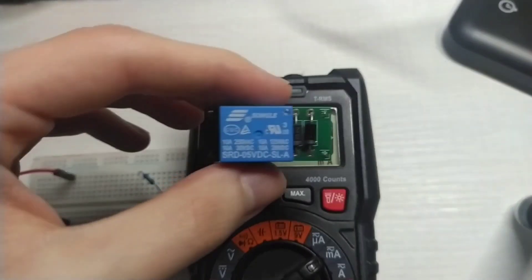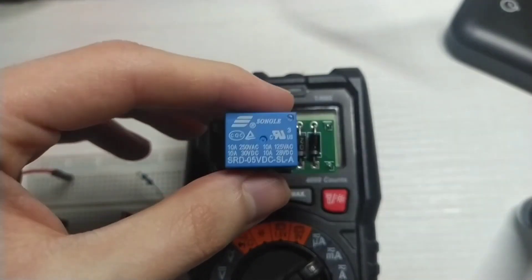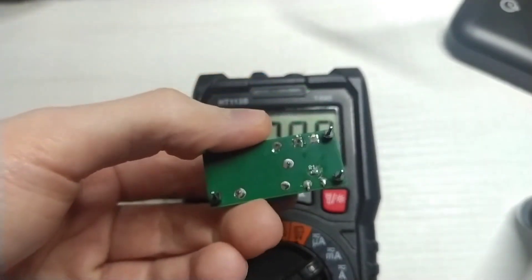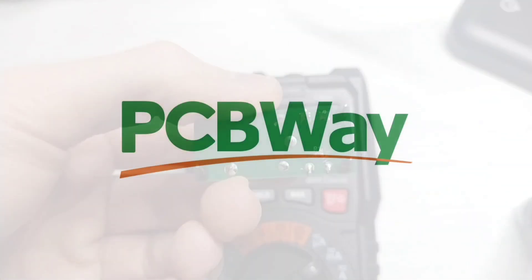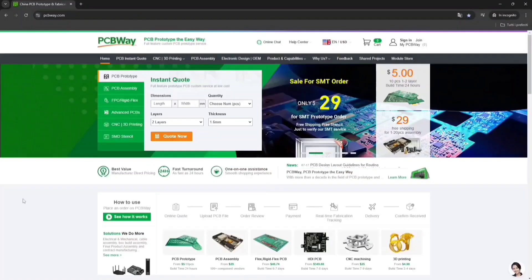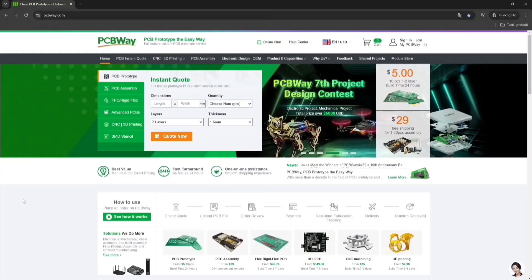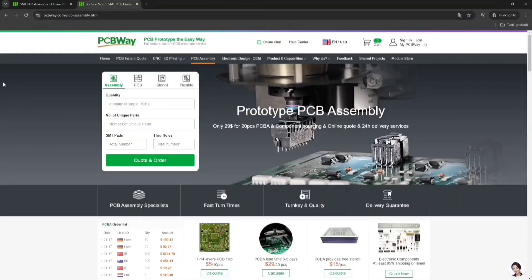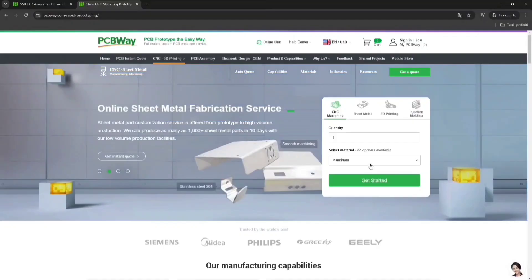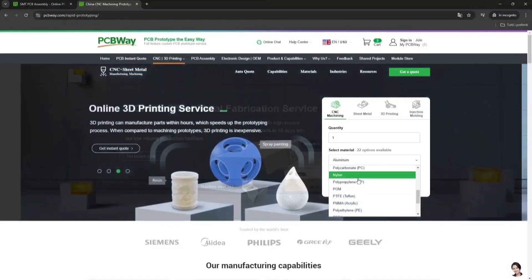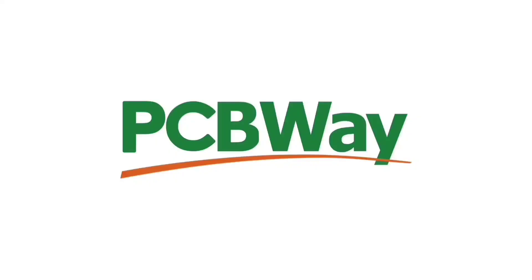And now I'm gonna try to use this relay circuit here that was made with PCBWay, the sponsor of this video. If you want really good looking PCBs, I highly suggest to check pcbway.com using the link in the description. They can also assemble PCBs for you or offer 3D printing and CNC machining with tons of materials to choose from. Just check pcbway.com, link in the description.